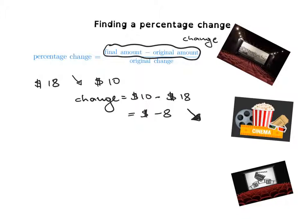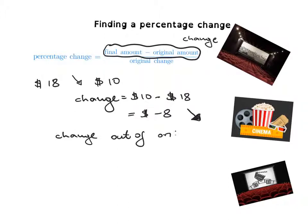Now I'm going to compare this change to the original amount. The original price was $18. What I want to find is change out of original — so that's negative $8 out of $18.